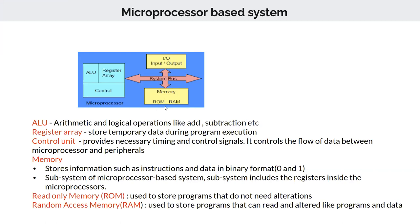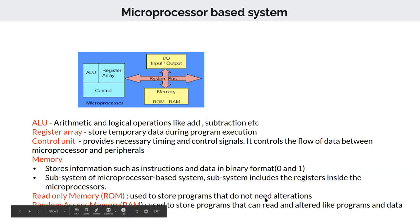ROM stores very basic information necessary for booting a system — information that does not need to be altered. When you switch on the system, the ROM contains instructions on where to find the operating system and how to load it from secondary storage into RAM. RAM is used to store programs and data that can be read and altered.